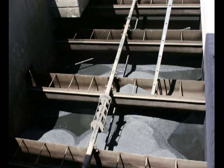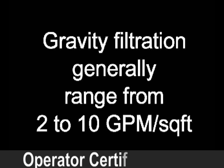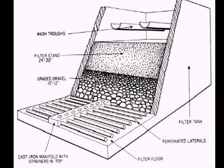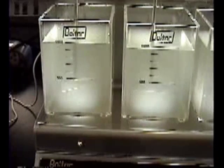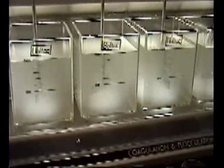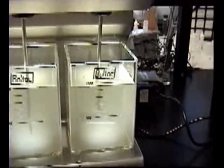With most of the larger particles settled out, the water now goes to the filtration process. At a rate of between 2 and 10 gallons per minute per square foot, the water is filtered through an appropriate 36-inch depth of graded sand. Anthracite coal or activated carbon may also be included in the sand to improve the filtration process, especially for the removal of organic contaminants and taste and odor problems. The filtration process removes silt and clay, colloids, biological forms, and floc. Remember this information for your assignment or certification exam.